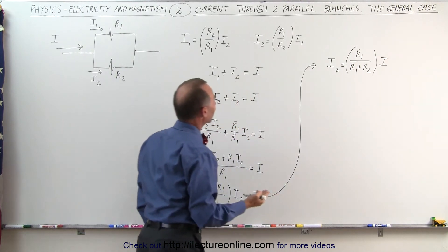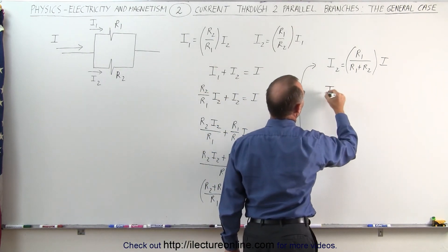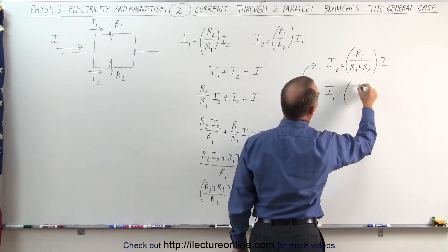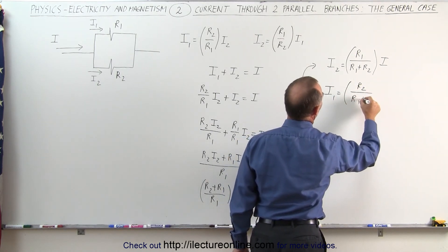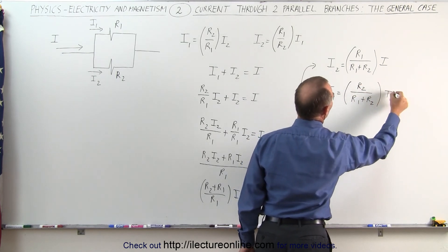And then likewise, if I then solve this for I1, I can then say that I1 is therefore equal to R2 divided by R1 plus R2, that's an R, times the total current I.